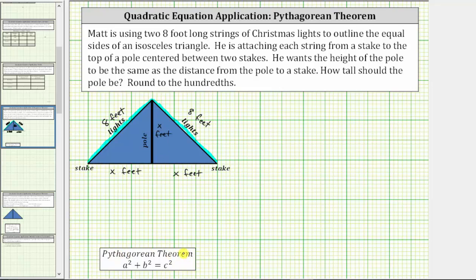Using the Pythagorean theorem, a and b are the lengths of the two legs, which in our case are both x feet. c is the length of the hypotenuse, which in our case is eight feet.